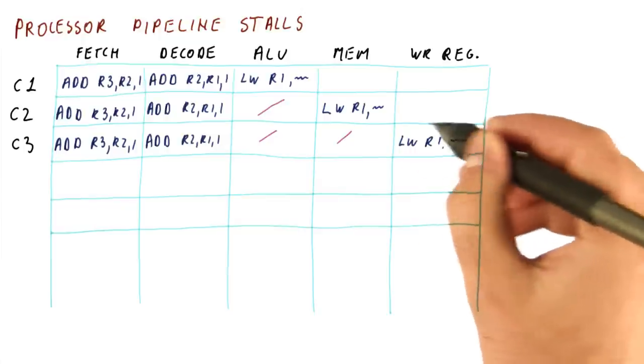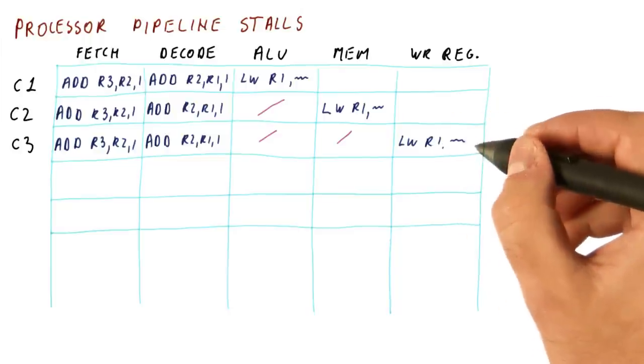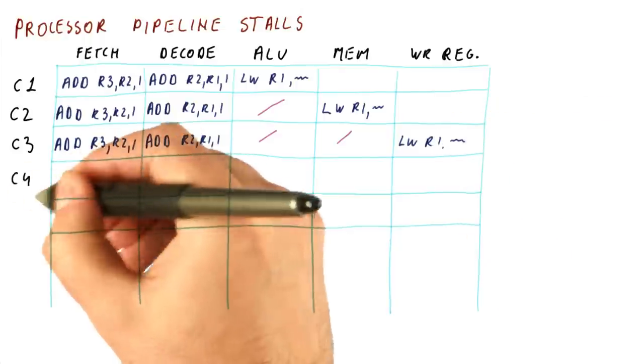So let's suppose that we can do this, that we can write R1 and then read it in the same cycle. If that is the case, then next cycle, which is cycle four, we will have the load leaves the pipeline.